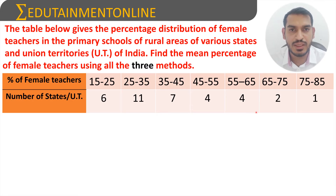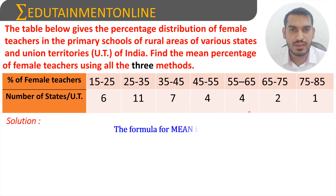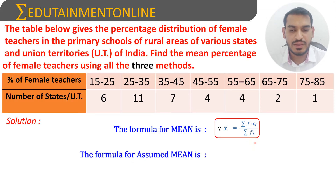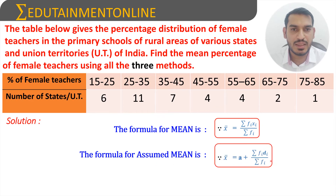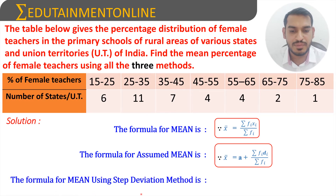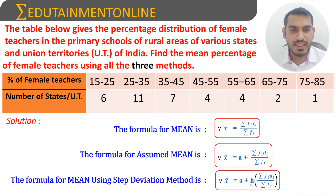We have to find the mean using three methods. The first is the Direct Method, with formula: mean = Σ(fi·xi) / Σfi. The second is the Assumed Mean Method: mean = a + Σ(fi·di) / Σfi. The third is the Step Deviation Method: mean = a + h · Σ(fi·ui) / Σfi.